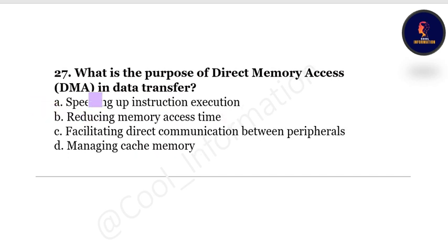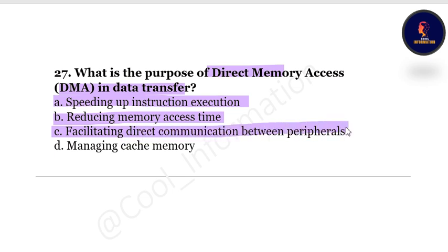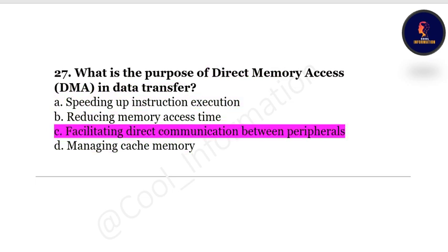Question 27: What is the purpose of Direct Memory Access in data transfer? Option A: speeding up instruction execution, Option B: reducing memory access time, Option C: facilitating direct communication between peripherals and memory, Option D: managing cache memory. The correct option is facilitating direct communication between peripherals and memory.